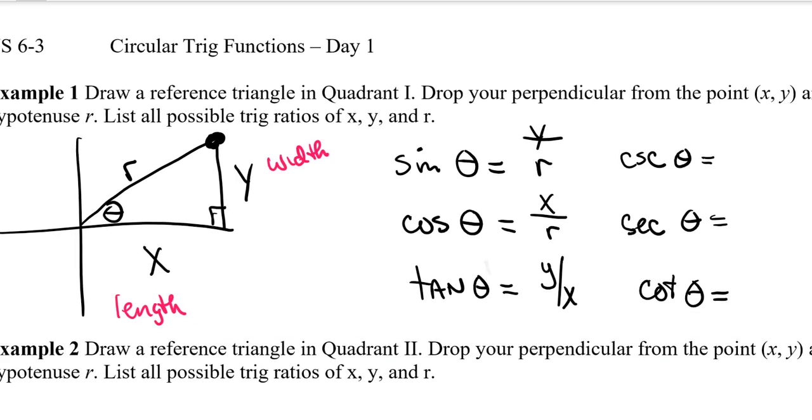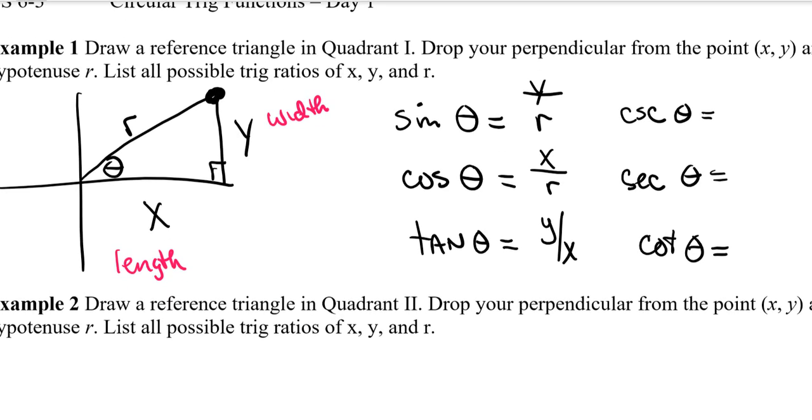So cosecant, instead of being like sine, that was opposite over hypotenuse, we'll take the reciprocal of that for cosecant. So that is going to be r over y. When we take a look at the secant, that is going to be the reciprocal of the cosine function, which is r over x. And then the reciprocal of tangent, so cotangent is going to be, instead of y over x, x over y.